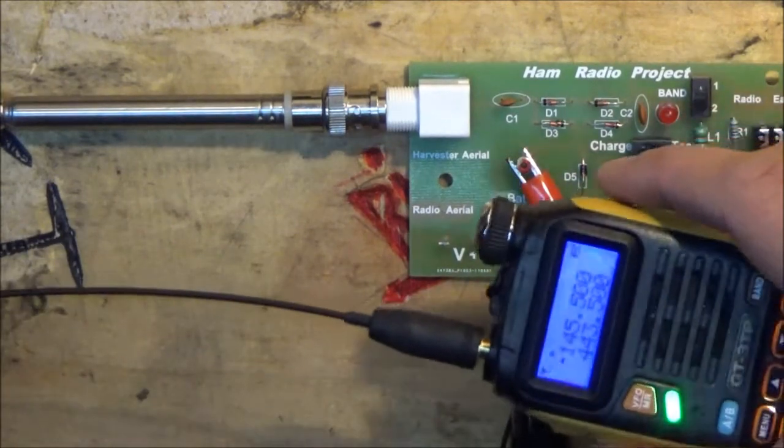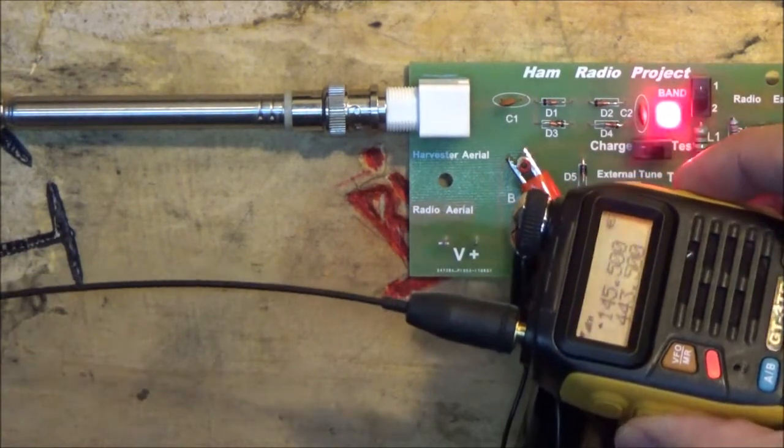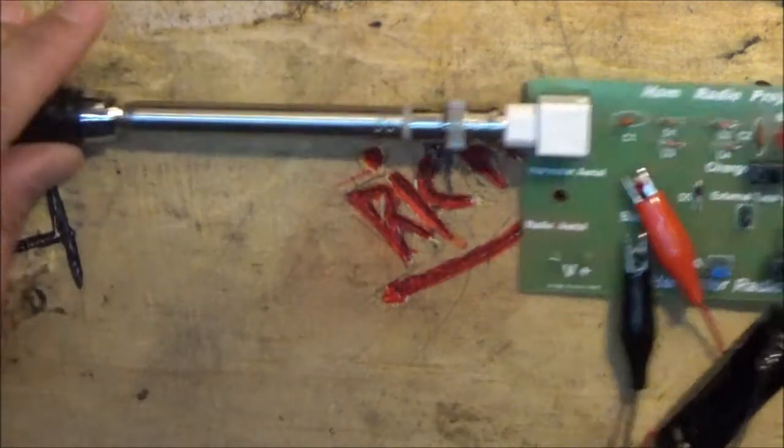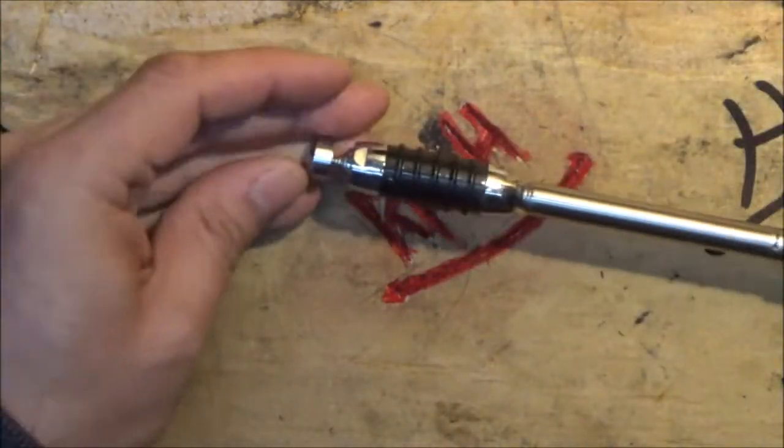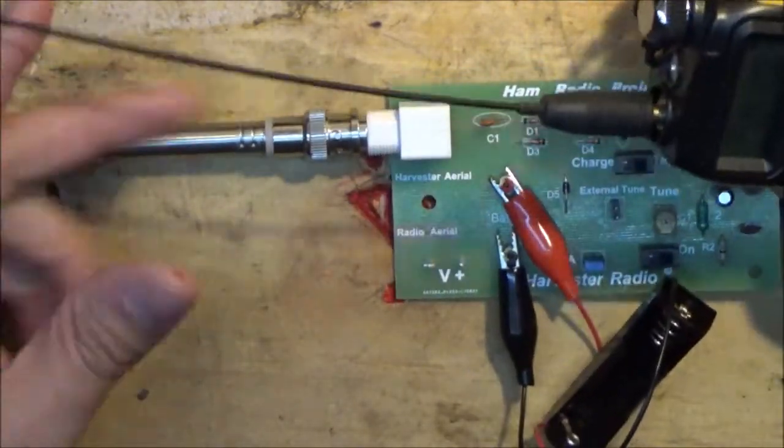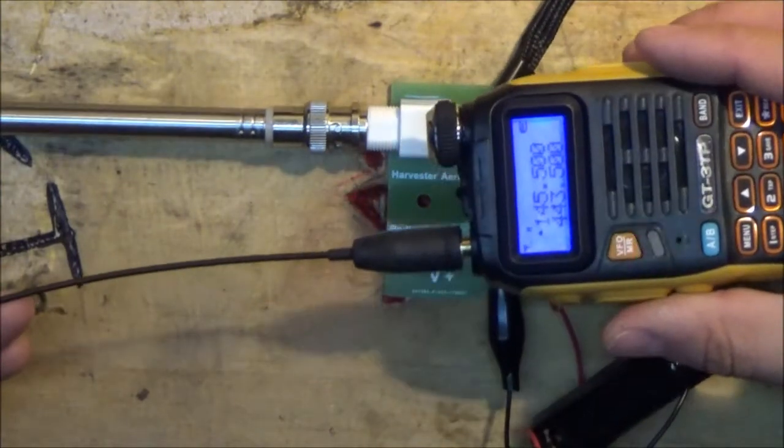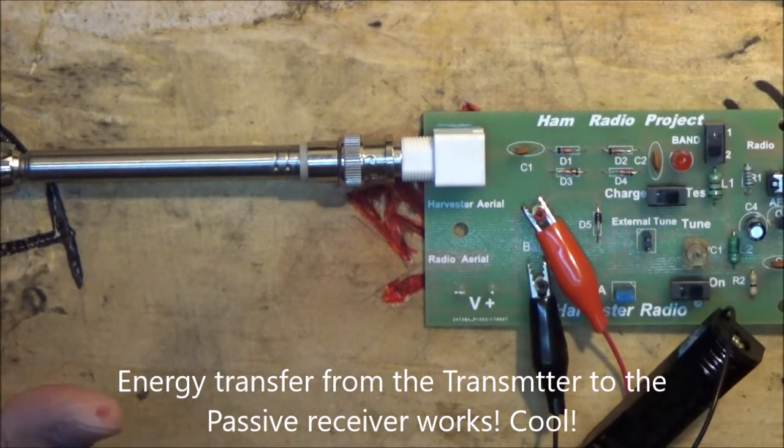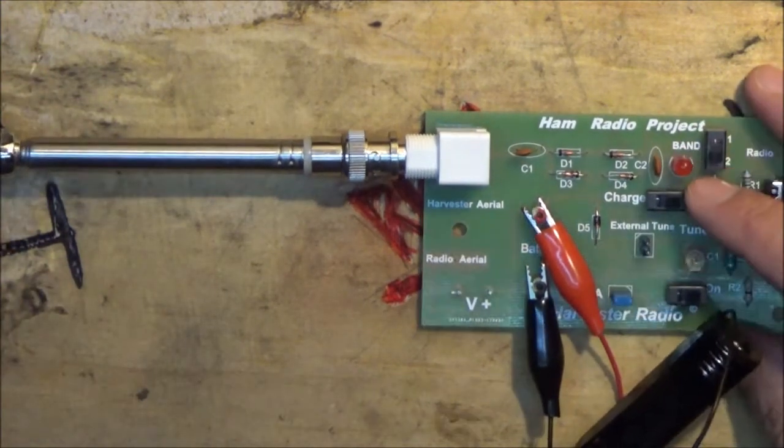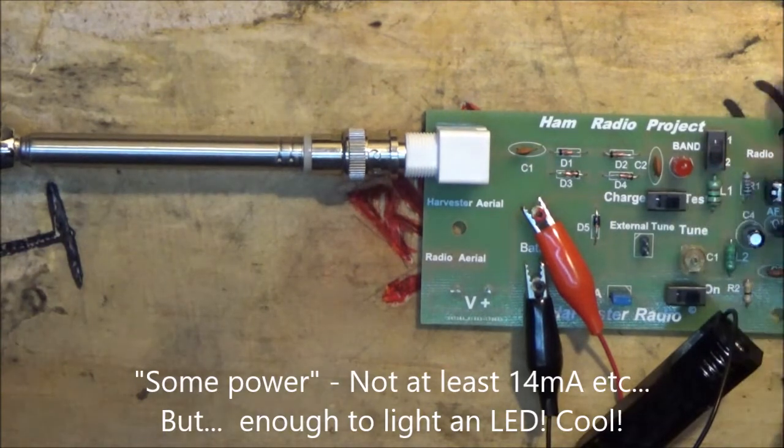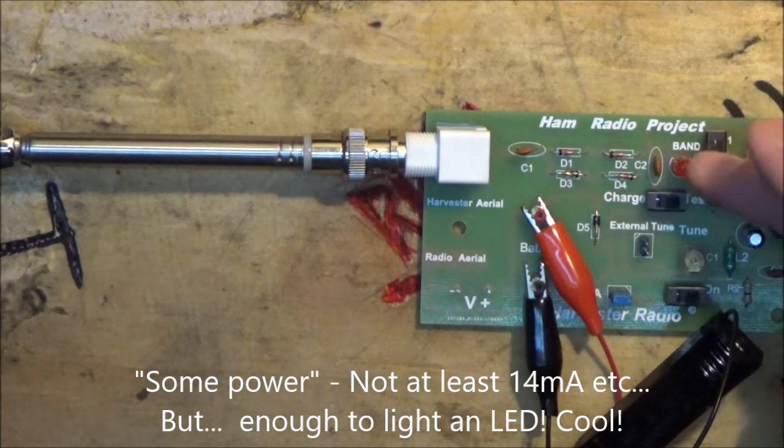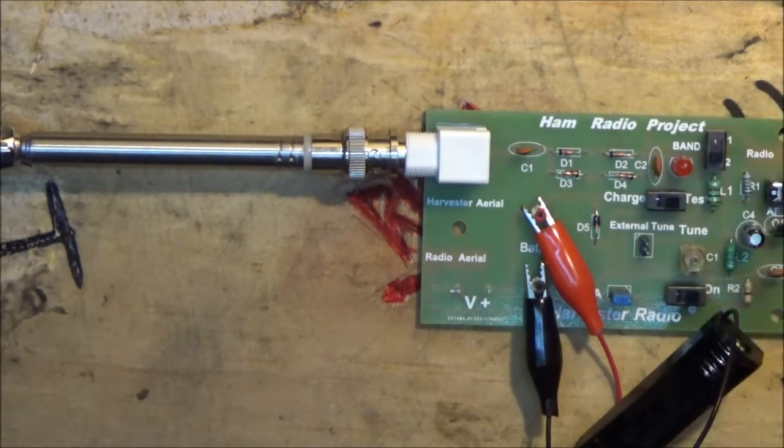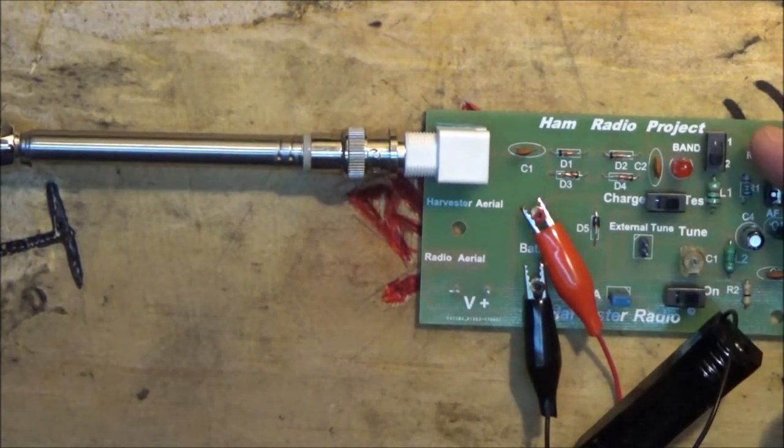So when I press the transmit button, yeah? There, I'm sure you can see that. This is completely passive. There's nothing connected to this right now, yeah? So when I press the transmit button on the radio, the LED lights up here, which means there must be at least 14 milliamps and 2.2 or 2-point-something volts going into this LED.